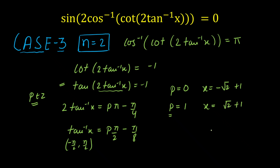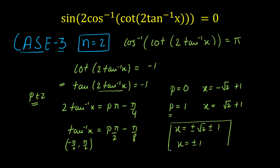In total we get 6 values of x: 2 from each of the three cases. The complete solution set is x = ±1 and x = ±(√2−1) and x = ±(√2+1) — that is, x = ±1, ±(√2+1), ±(√2−1). These six values form our final answer.